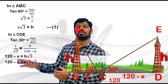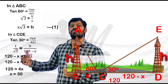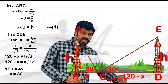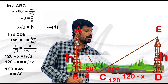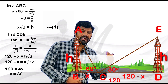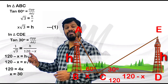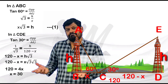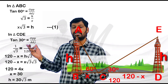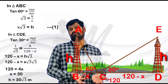So 120 minus x equals H into root 3. Substituting from Equation 1: 120 minus x equals 3x, so 120 equals 4x, which gives x equals 30. The second distance is 120 minus 30 equals 90. Height of pole is equal to 30 root 3.